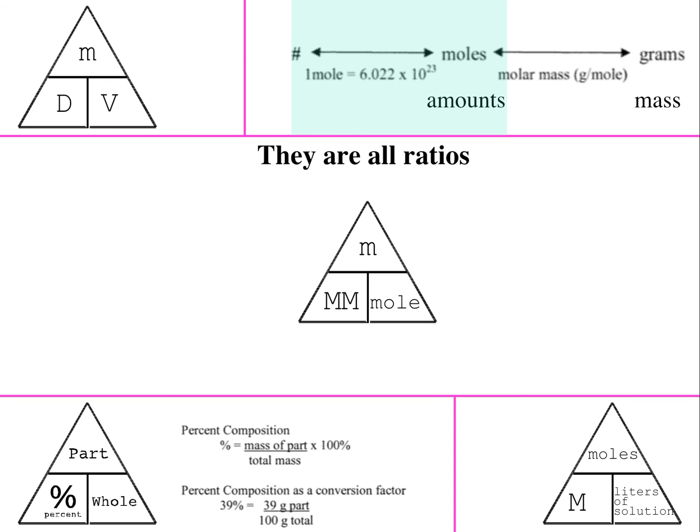And we discovered that these are all ratios. The upper left-hand corner is our density triangle. Density is a ratio of mass per volume, where mass is given in grams and volume is given in milliliters.